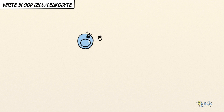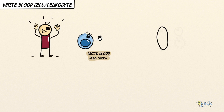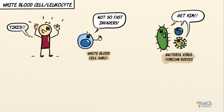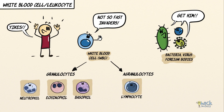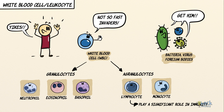White blood cells, or leukocytes, are immune cells that protect the body against foreign invaders like microbes, viruses, and other foreign bodies. There are primarily two different types of white blood cells: granulocytes and agranulocytes. Neutrophils, eosinophils, and basophils are granulocytes, while lymphocytes and monocytes are agranulocytes. Lymphocytes are white blood cells that form a very important part of the immune system.